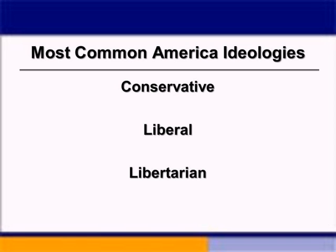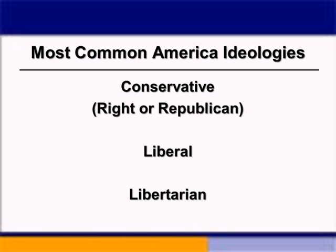They're not the only ideologies we have, but these are the three most common. As we talk through the rest of this chapter and further into the semester, I'm going to use the terms conservative and liberal quite a bit. We as Americans can sometimes make generalizations about these ideologies and use terms interchangeably. For example, conservatives — a lot of times we'll say an individual who is conservative is on the right, meaning the right side of the political spectrum. Conservatives tend to be Republicans, and these three words can generally be used interchangeably, but not always.